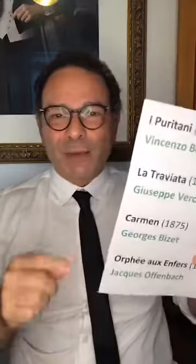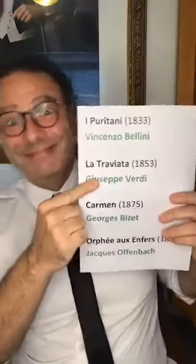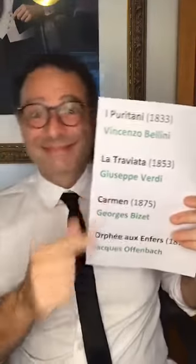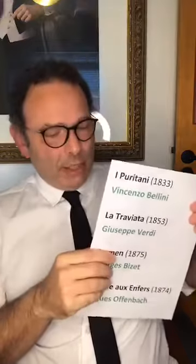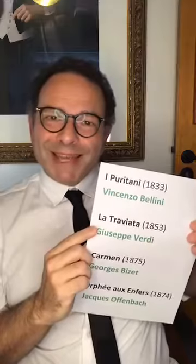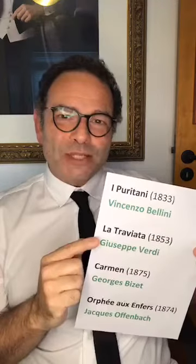From this era we also have the Brindisi — the toast — from La Traviata by Giuseppe Verdi: 'Libiamo, libiamo ne' lieti calici...' Very beautiful. And this is where we start getting very serious. In the romantic period, opera starts talking about you — real people — because for the first time the middle class is being portrayed on stage.